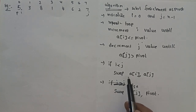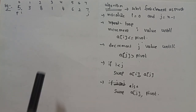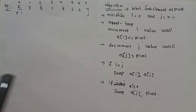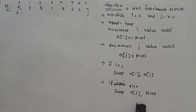If i is less than j, swap a[i] and a[j]. Otherwise, swap a[j] and pivot. Once the pivot element is swapped in, it reaches its exact position. All elements less than the pivot are on the left side, and all elements greater than the pivot are on the right side. Let's apply this to the example.